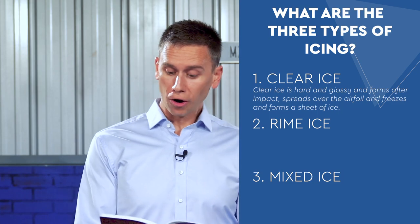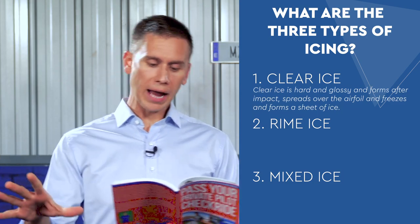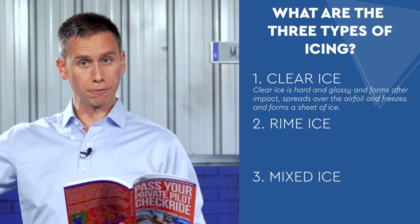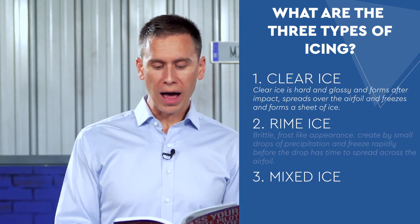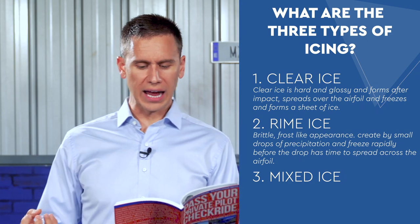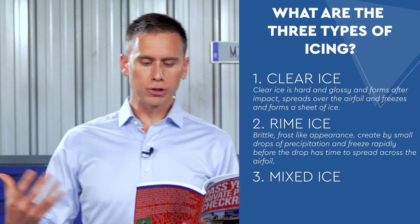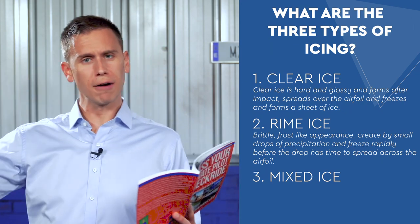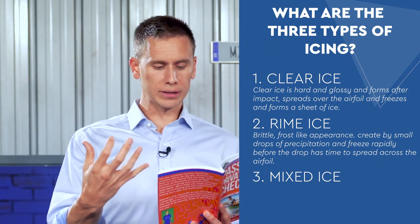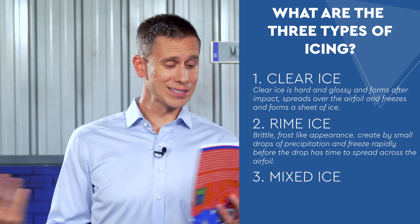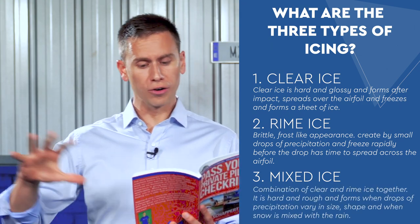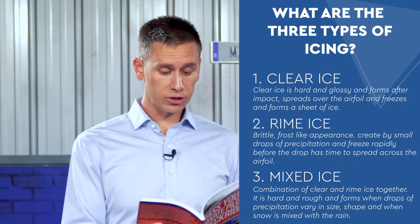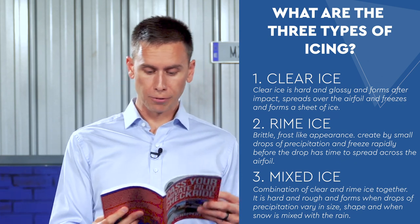Clear ice is hard and glossy. It forms after impact, spreads over the airfoil, and freezes — a sheet-like freeze over the airfoil. Rime is that brittle, frost-like appearance, created by small drops that freeze rapidly before the drop has time to spread across the airfoil. Brittle is the key word there. Mixed is a combination of the two — hard and rough. It forms when drops vary in size, or when snow is also mixed in with the rain.